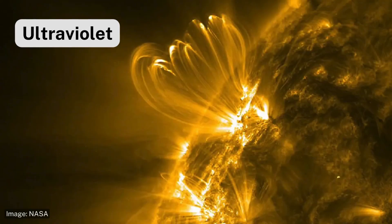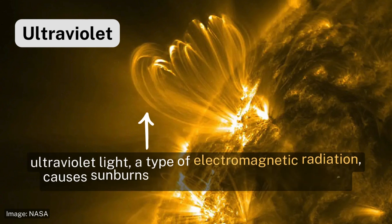Ultraviolet light is a form of electromagnetic radiation responsible for sunburns and tanning.